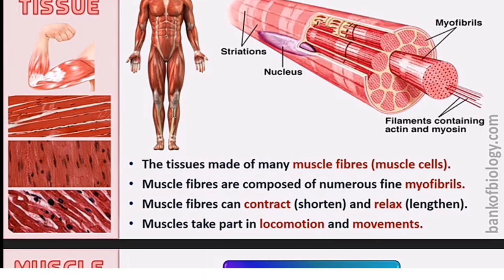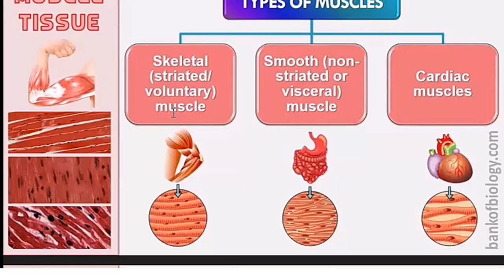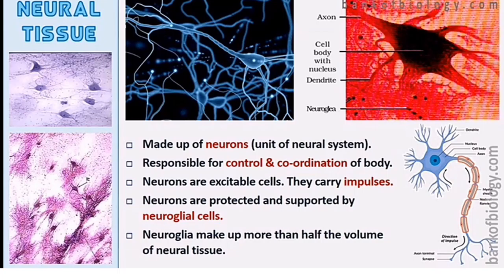Now, muscle tissue. Muscles are made of fibers called myofibrils. They contract and relax, helping in locomotion and movement. There are different types: skeletal muscles, smooth muscles, and cardiac muscles — present in areas like our hands, stomach, and heart. For example, biceps and triceps are skeletal muscles; we contract our hands and relax them when we move.